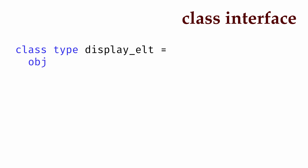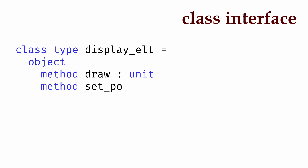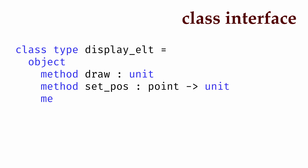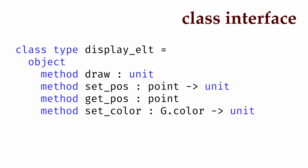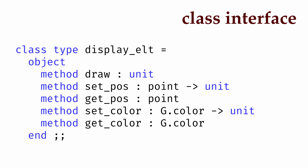We'll say that objects of this class type will have a method draw that returns unit, a method set_pos that takes a point and returns unit, a method get_pos that returns a point, a method set_color that takes a color and returns unit, and a method get_color that just returns a color.